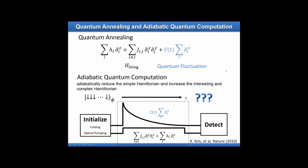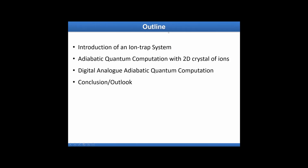With that, here is my outline: first I'll talk about the ion trap system we're using for computation, then what kind of adiabatic quantum computation we can do with ions, and also the digital version of quantum computation we are doing, and finally some outlooks.